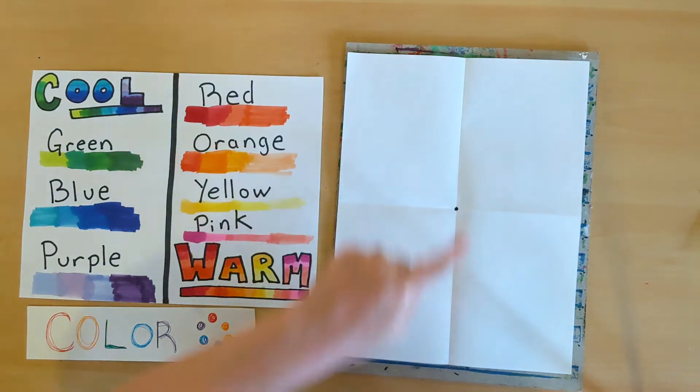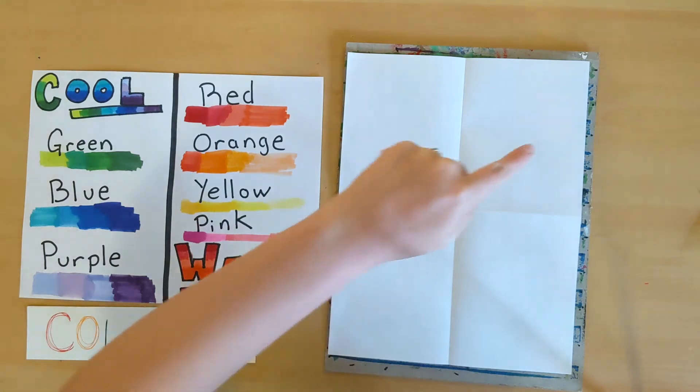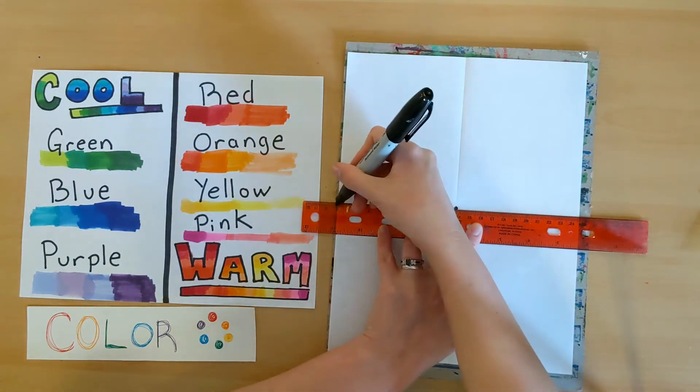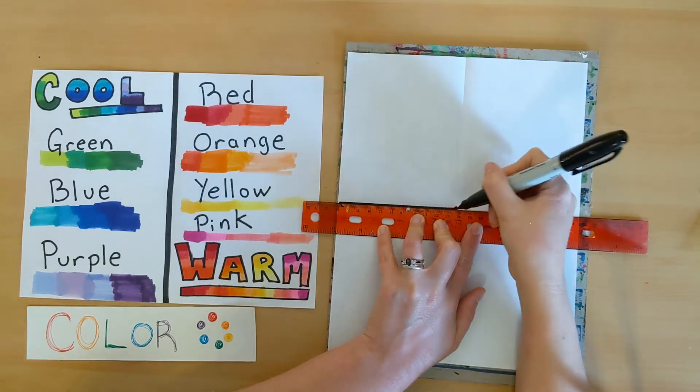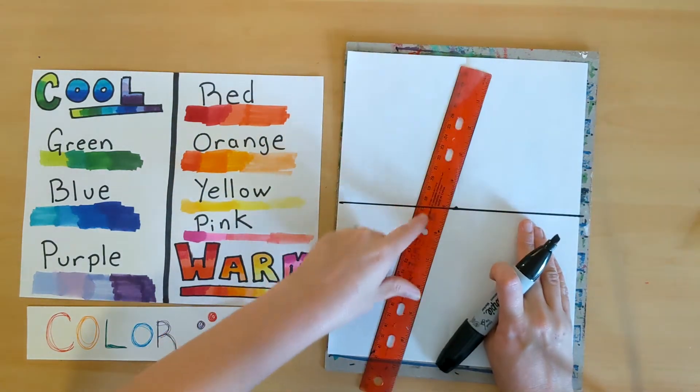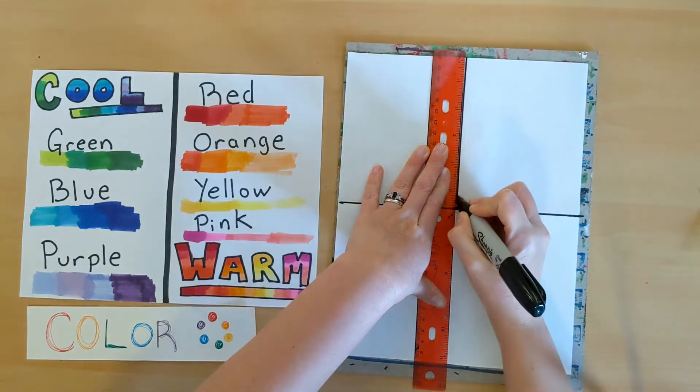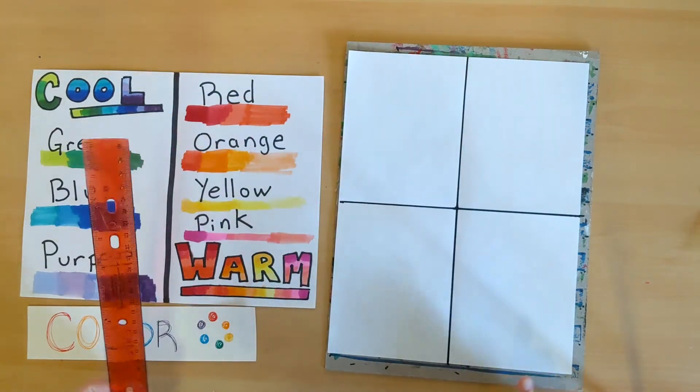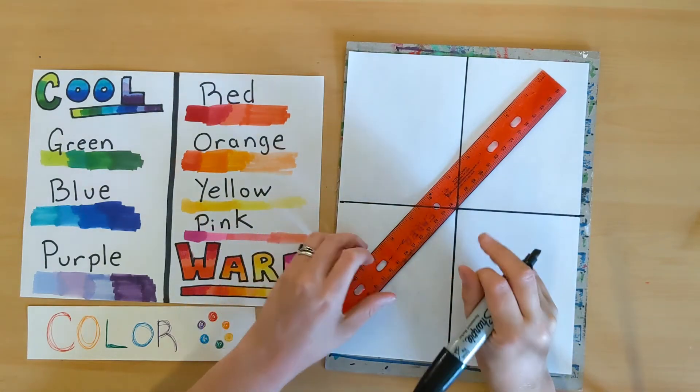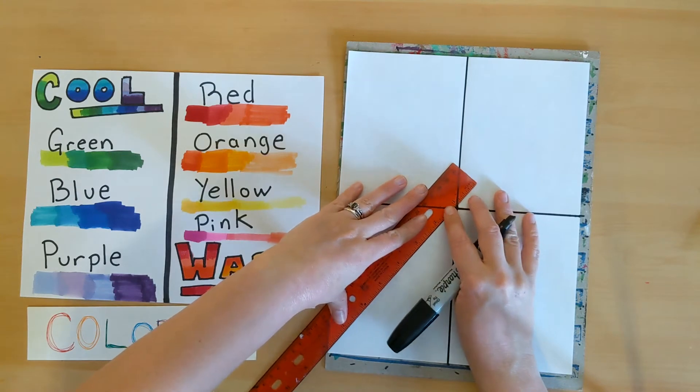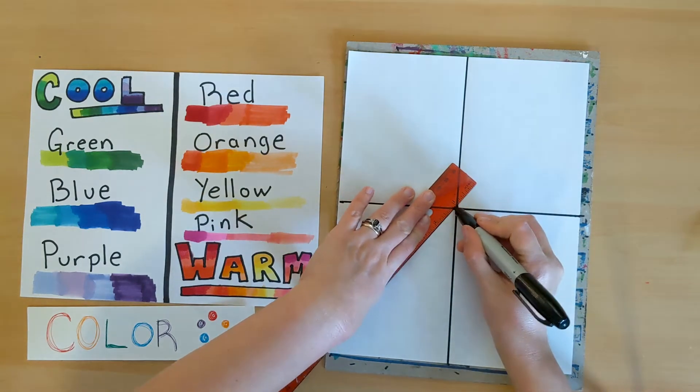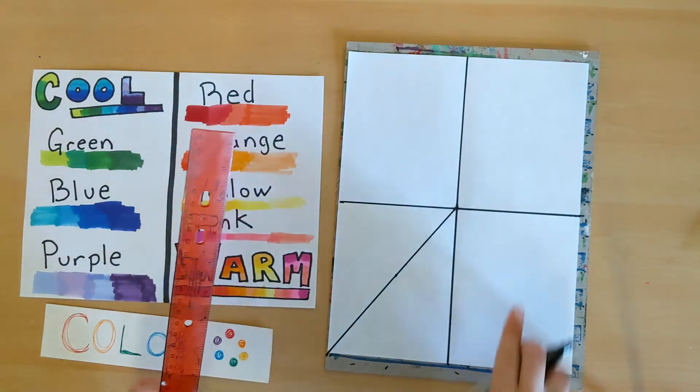You're going to want to have one on either side, and one on each corner. I'm gonna draw from the edge to the point, from the point to the edge. The corners get a little bit trickier because most rulers are not quite long enough. So we're actually gonna go from the center point to the edge.